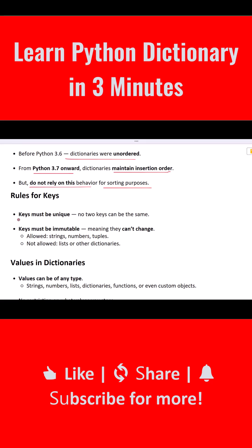Keys must be unique and immutable. Every key in a dictionary must be unique. You can't have two keys with the same name. Also, keys must be immutable, meaning they can't be changed. So strings, numbers, and tuples can be used as keys, but not lists or other dictionaries.